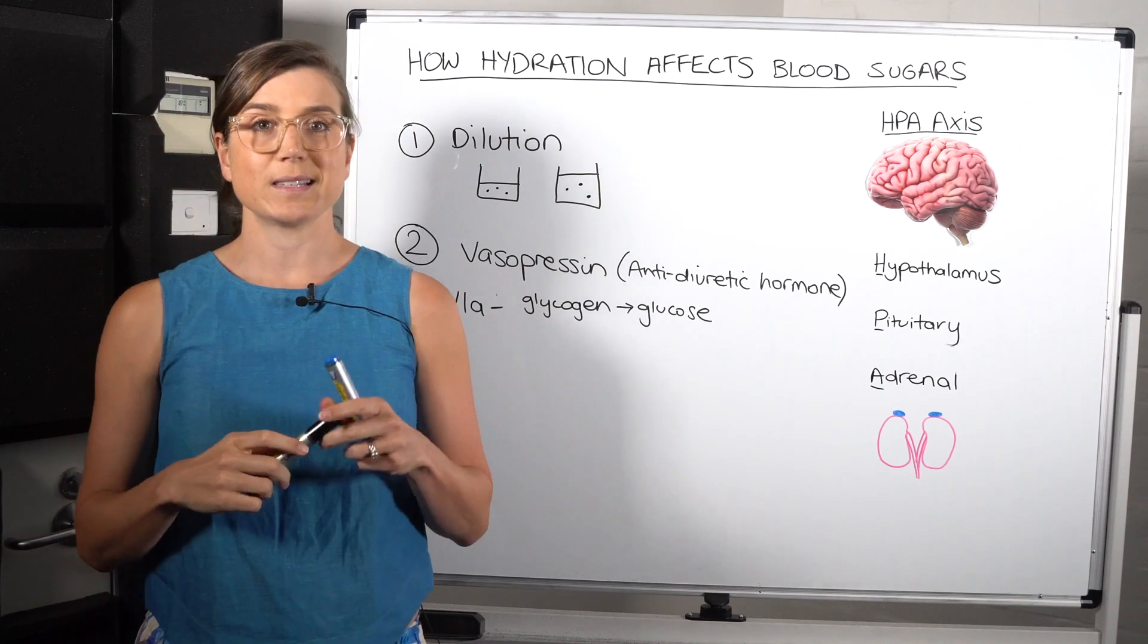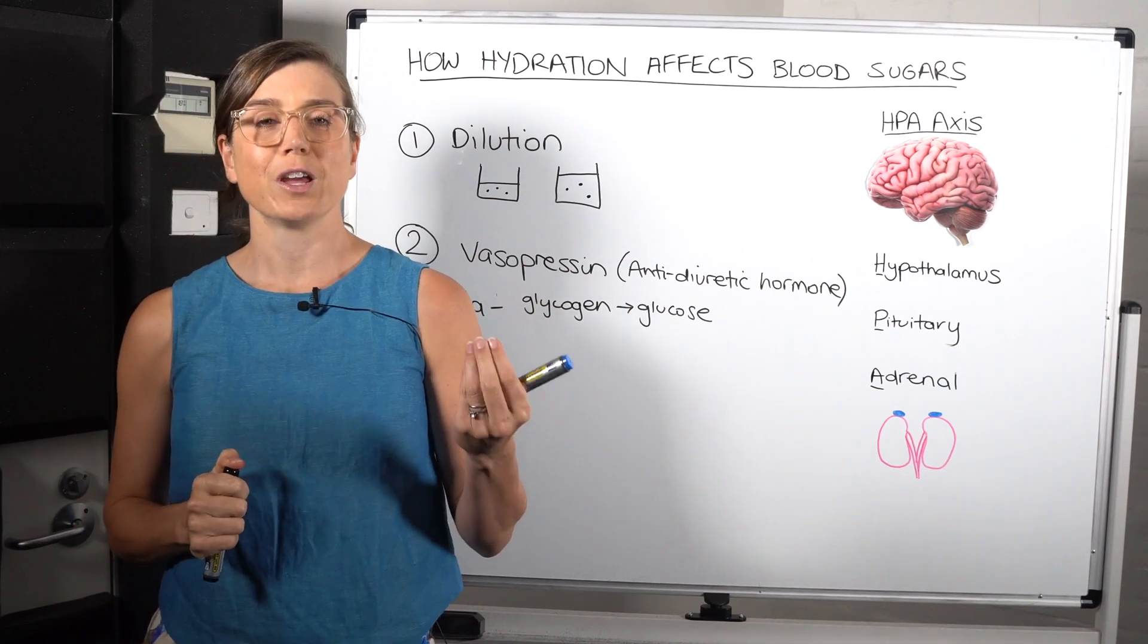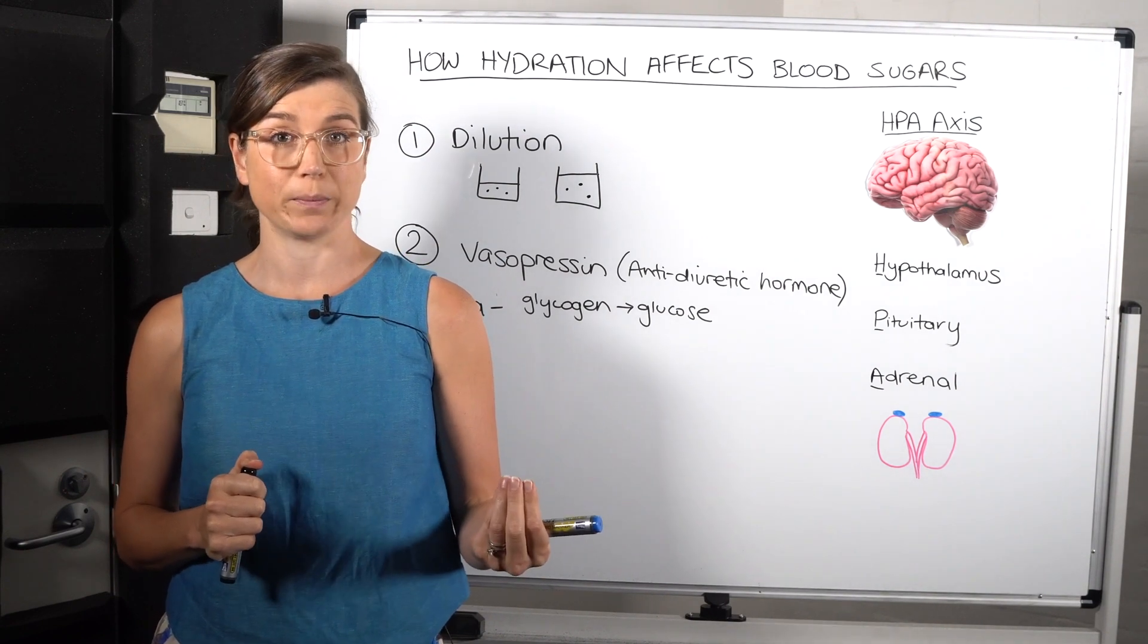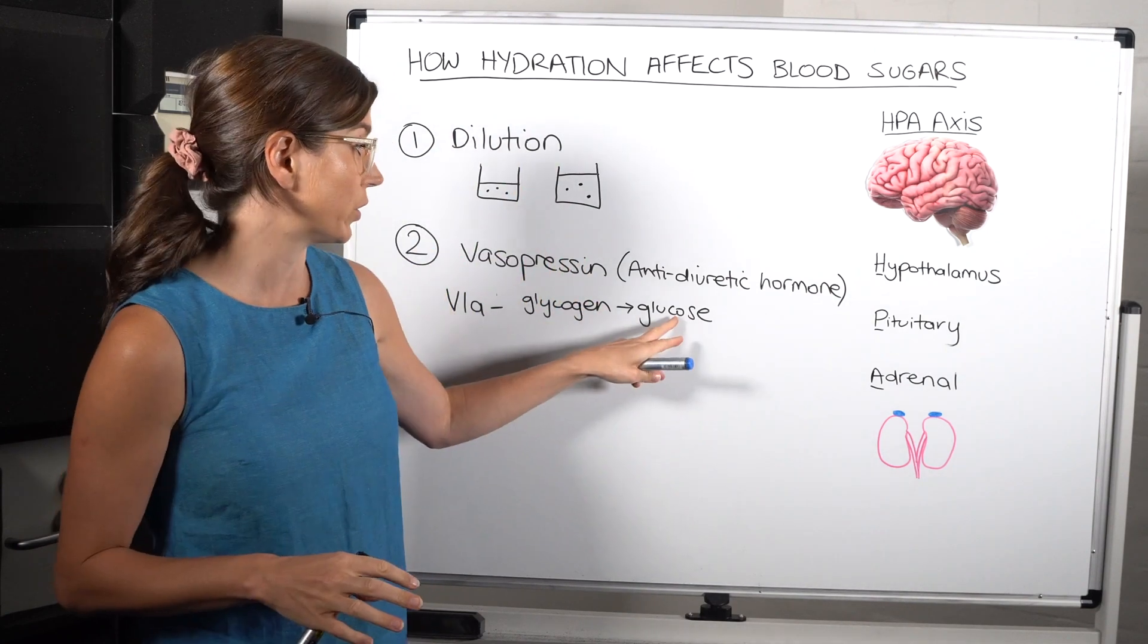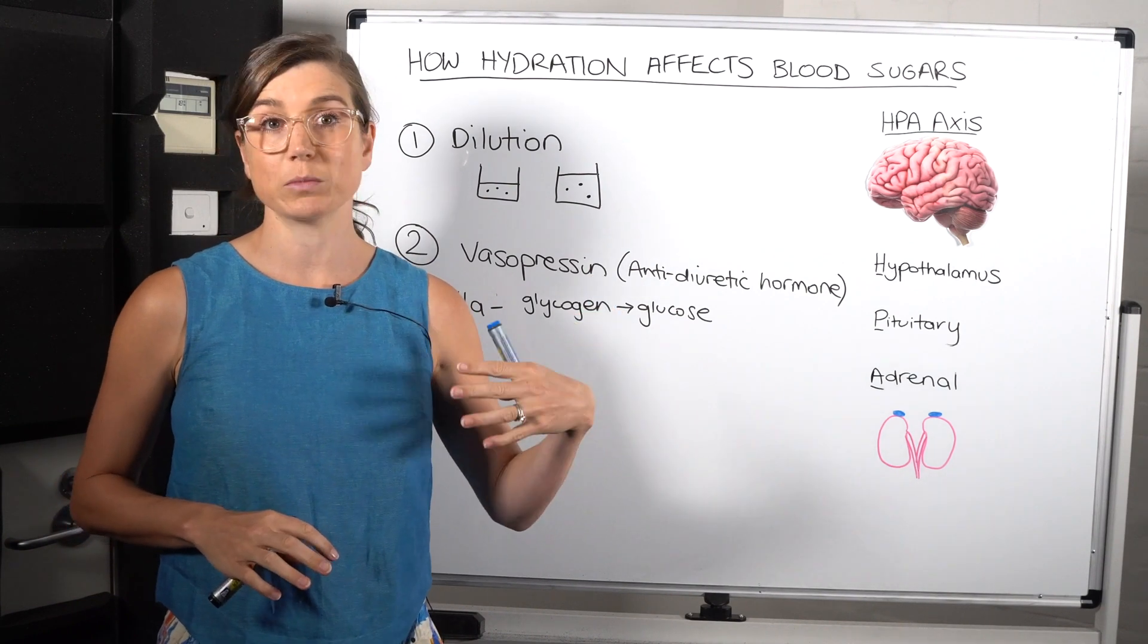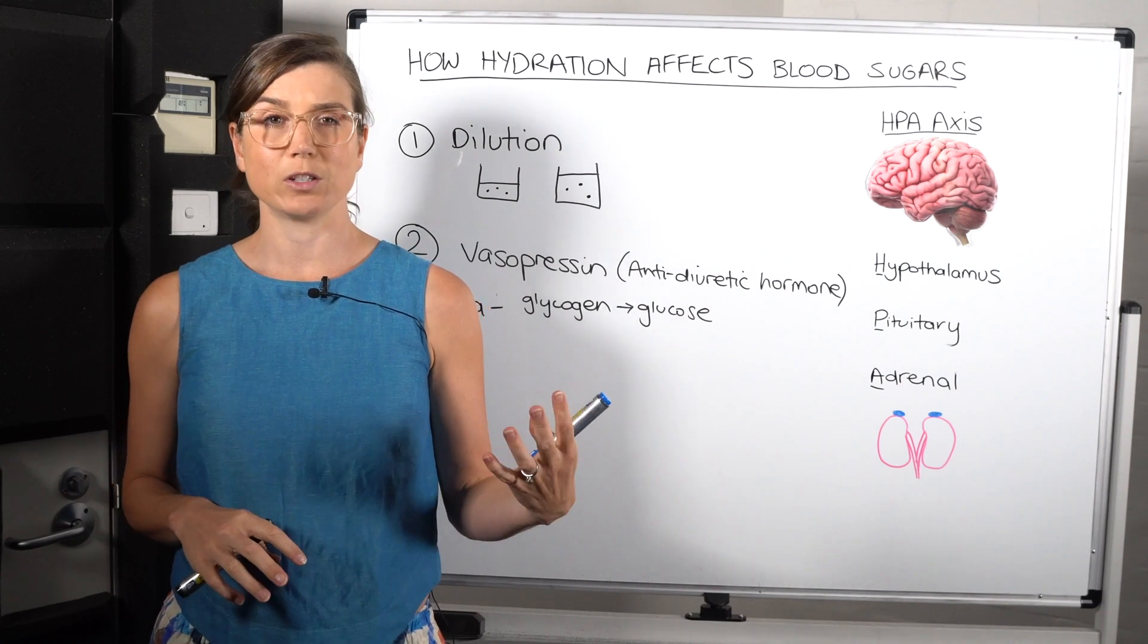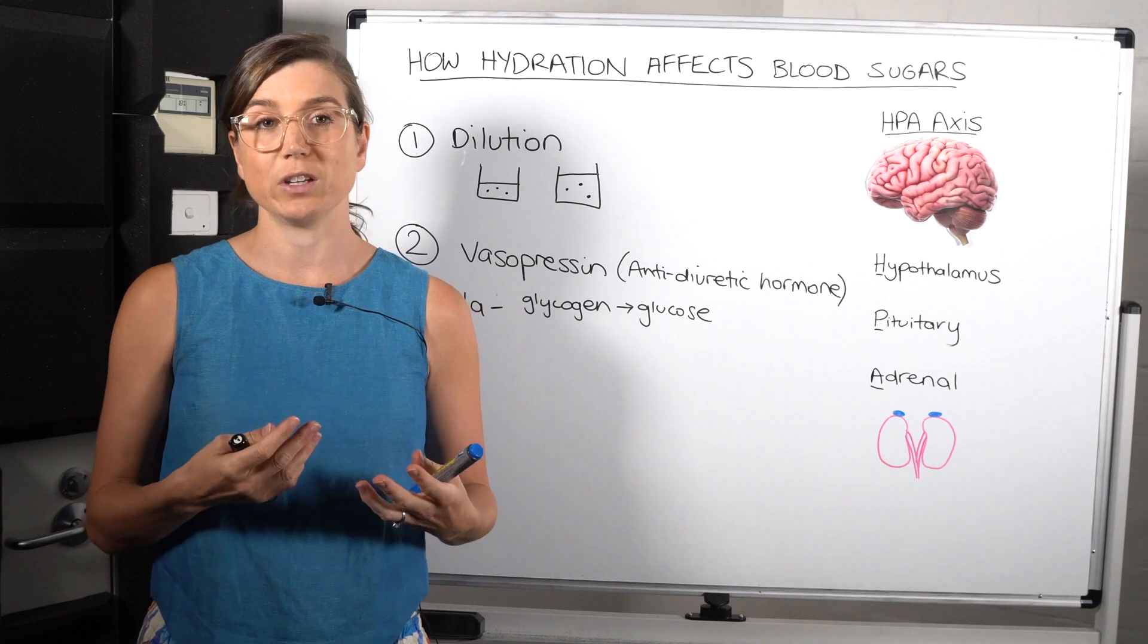So glycogen is the storage hormone, storage molecule of glucose. So glucose is stored in the body, in your liver and in your muscles as glycogen. So when we break glycogen down, it breaks off into glucose molecules. And so this basically is a way to increase your blood sugar levels if you need them. So for example, when you're going for a run, you are going to use up some of the glycogen stores in your muscles for the energy you need to go for that run.